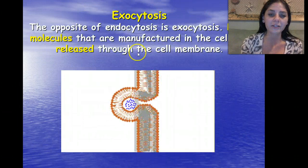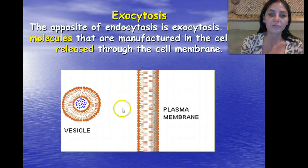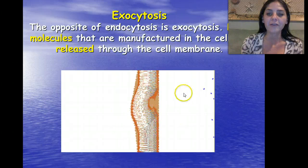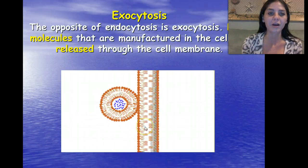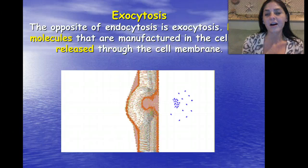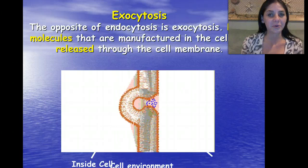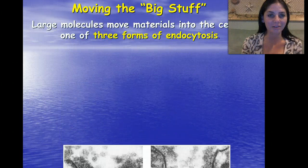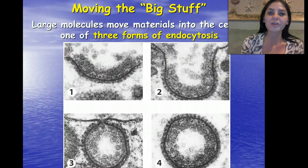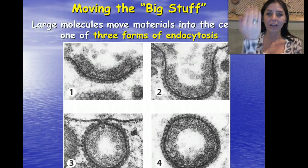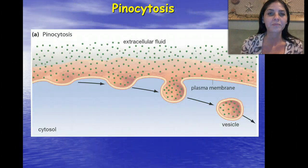In exocytosis, a vesicle fuses with the membrane and the molecules are exited from the cell. This is the opposite of endocytosis. Large molecules move materials into the cell in one of three forms of endocytosis. Endo — inside.